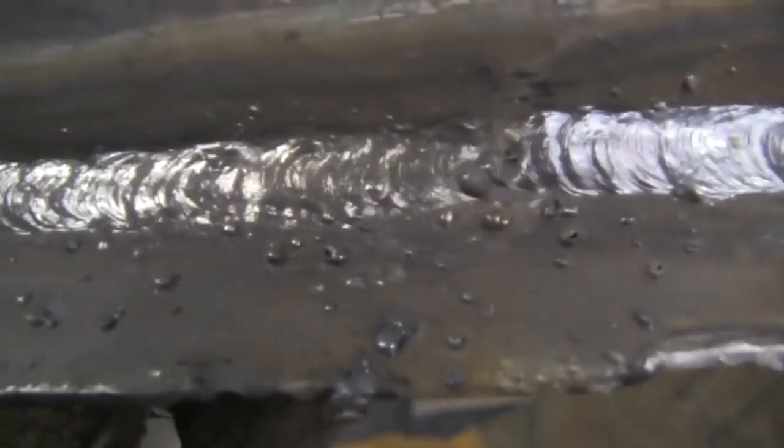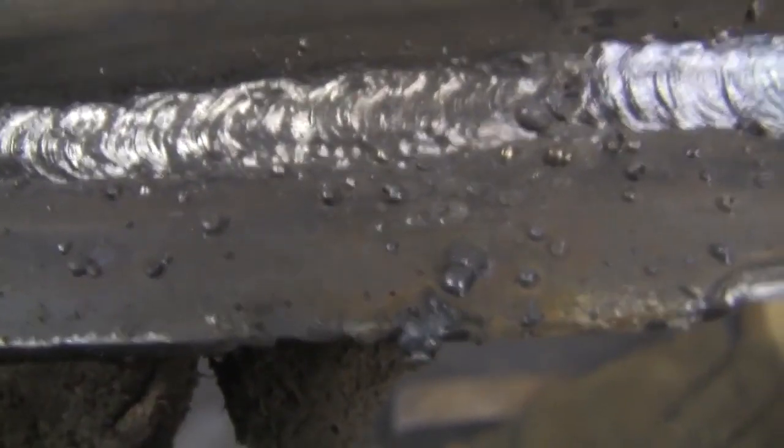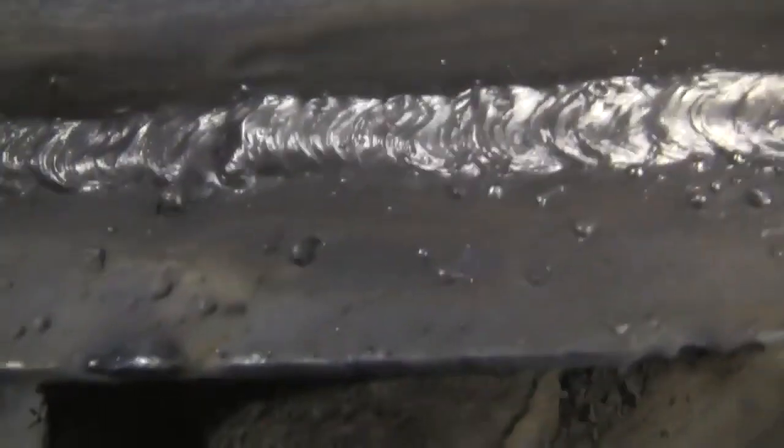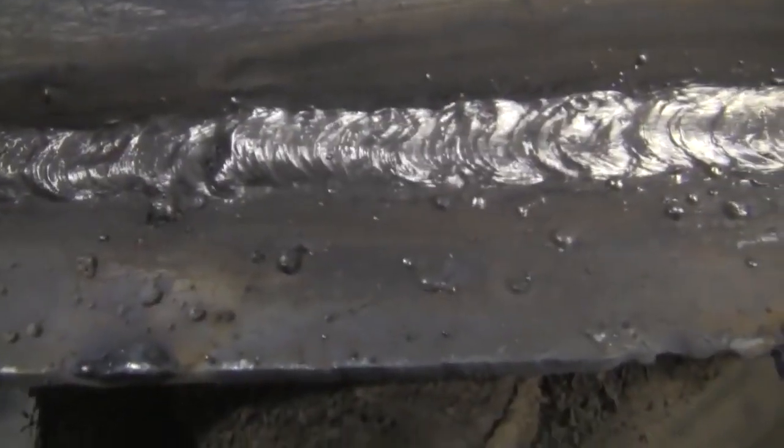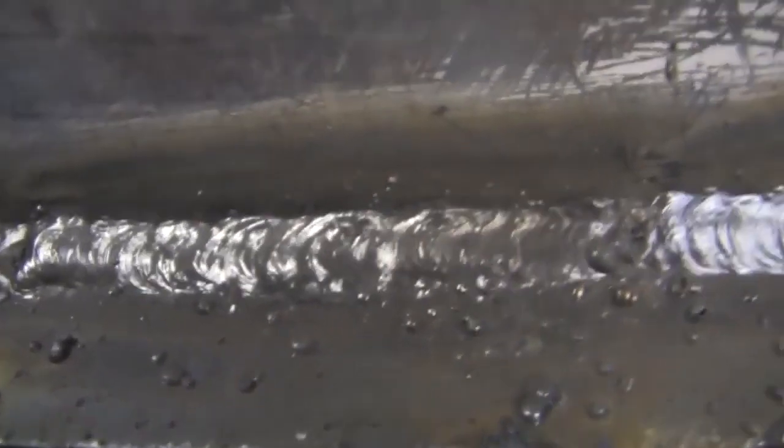So yeah, as you can see, whenever you run on DC electrode positive as compared to electrode negative with 6013, you get a noticeable increase in splatter, but you also get a whole lot more penetration, so I feel like it's worth it.